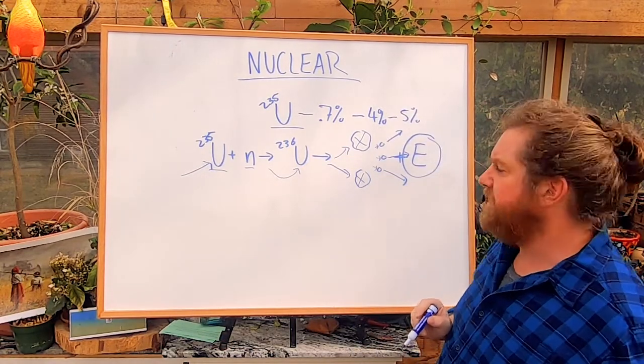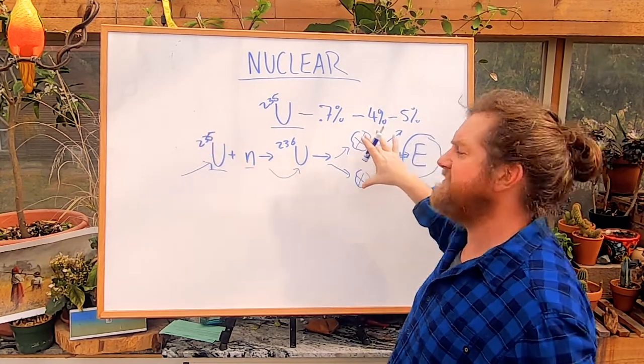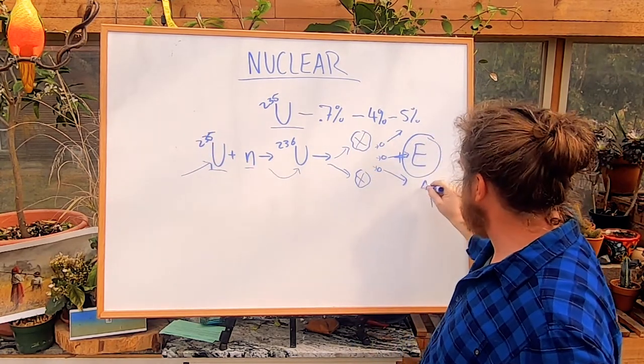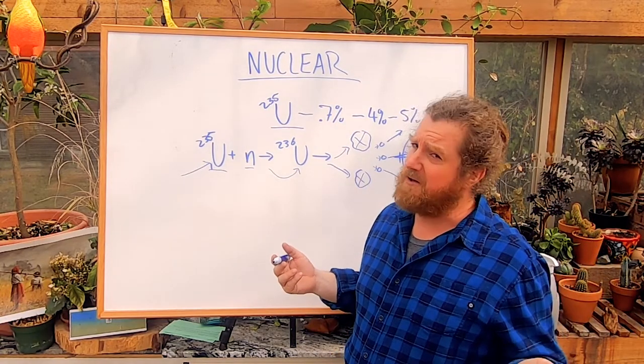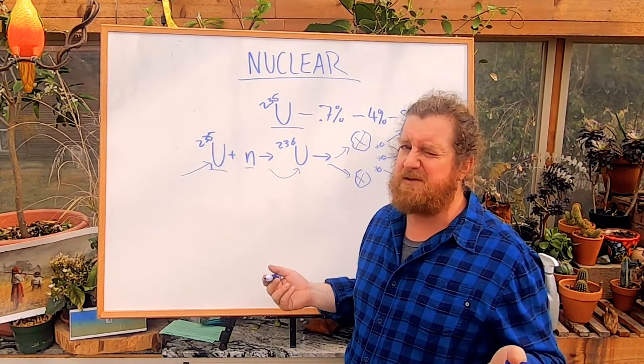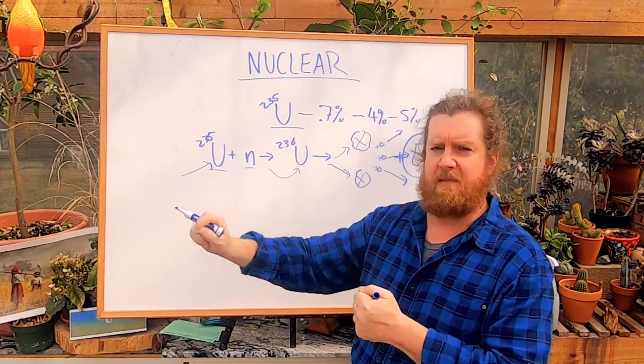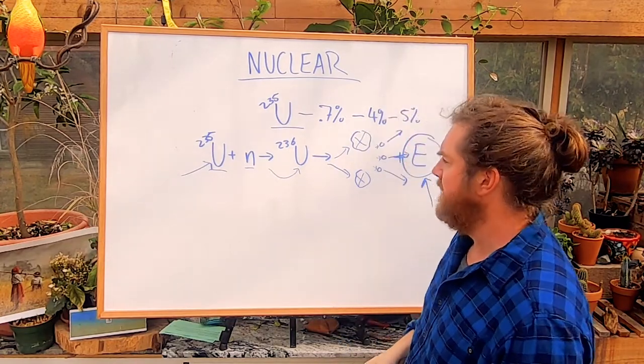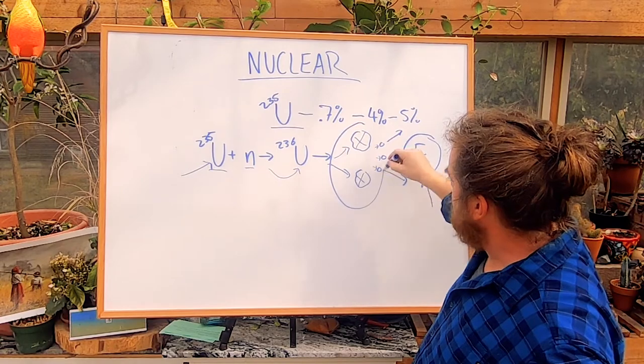We can figure out how to control this reaction and we can take that energy and—surprise—we're gonna boil water with it. And that's what we do. We use that water to spin a pinwheel connected to a magnet, spin the magnet, create electricity. So on paper, nuclear is beautiful.